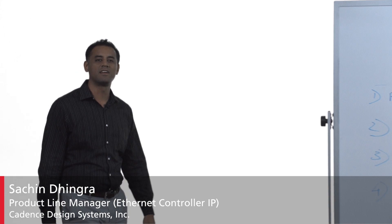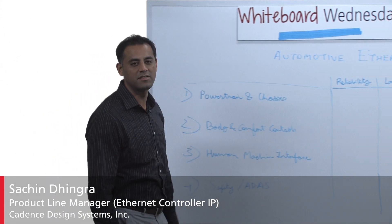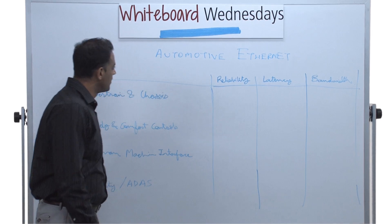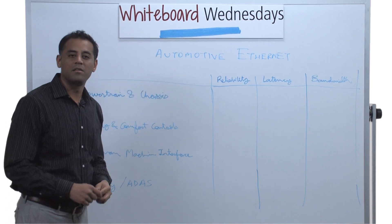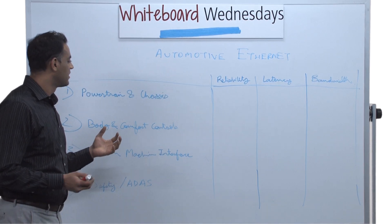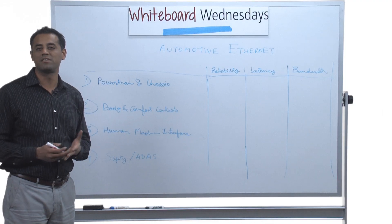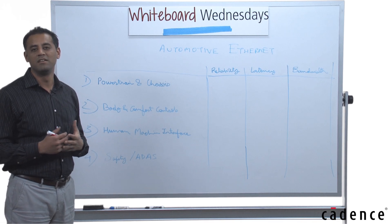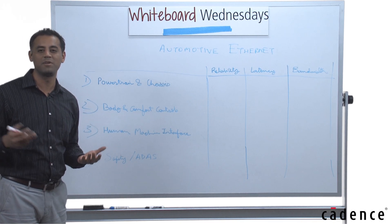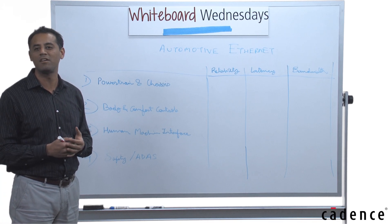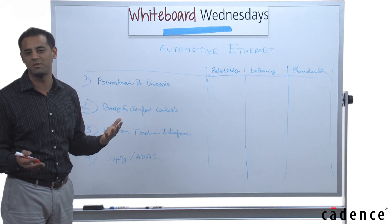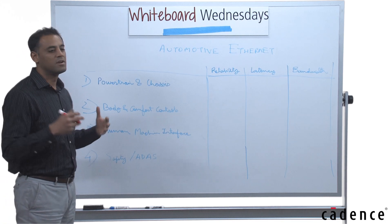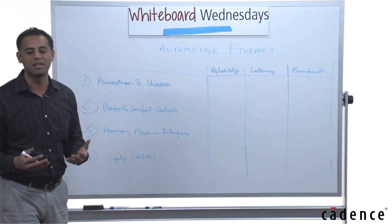Hello, my name is Sachin Dhingra and I'm the product line manager for Ethernet Controller IP. Today we're going to talk about automotive Ethernet. Electronics are everywhere in modern cars — you have cars that can drive themselves, and cars like Tesla where you can download an update and go from 0 to 60 in 3.2 seconds down to 2.8 seconds with a simple firmware upgrade. All this is enabled with electronics.